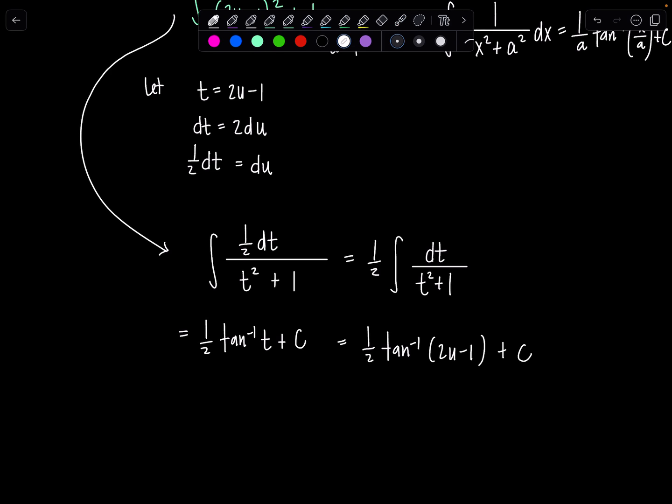And then we're not done because, remember, the original problem was in terms of x. And we let u be sine squared x. So I have 2 sine squared x minus 1 plus c. And now we're done.